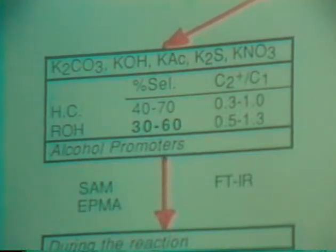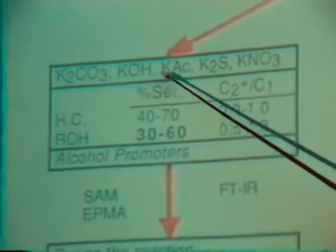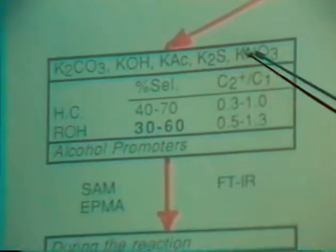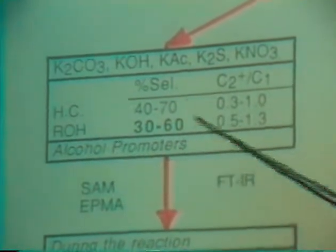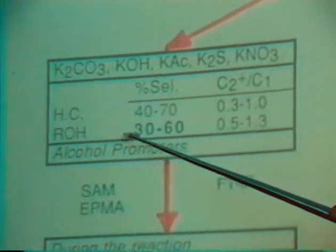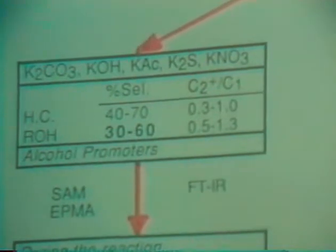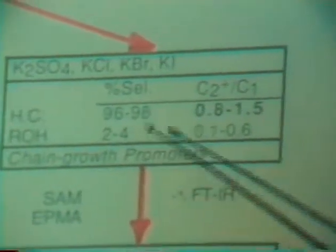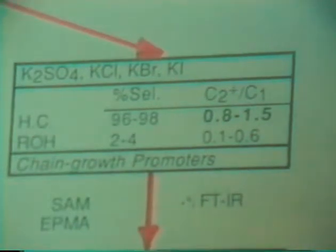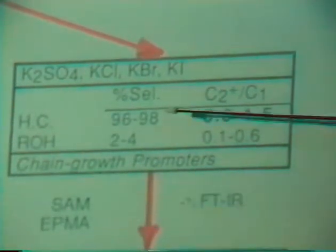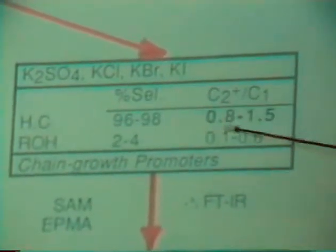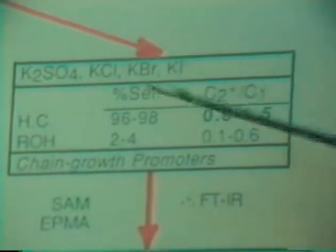We observed the effect and found that those potassium salts promote one of two things. Potassium carbonate, hydroxide, acetate, sulfide, and nitrate do promote alcohol formation, starting from 30 to 60%. This group will be called the carbonate group for convenience. Potassium sulfate, chloride, bromide, and iodide doesn't do much about alcohol formation, but they consistently increase the formation of higher products so that this C2+/C1 index increased from 0.7 to up to 5.